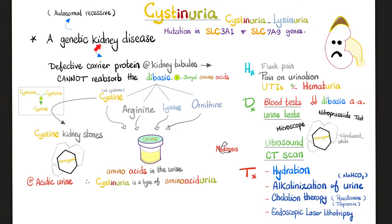Cystinuria is a genetic kidney disease with an autosomal recessive pattern of inheritance. The mutation occurs in the SLC3A1 and SLC7A9 genes. Genes normally code for proteins — if the gene is problematic, the protein will be defective as well. This results in defective carrier proteins located in the kidney tubules.